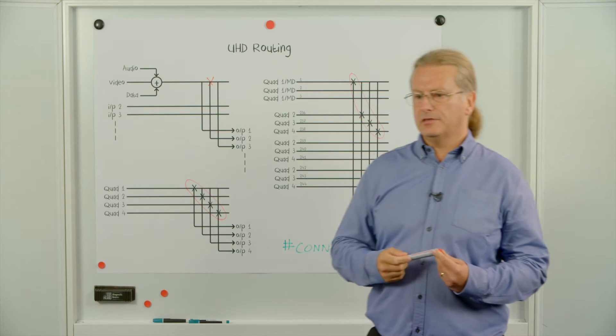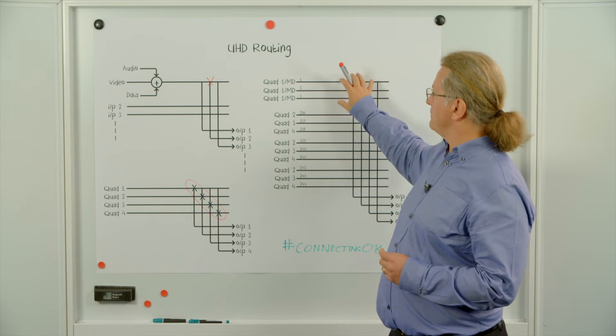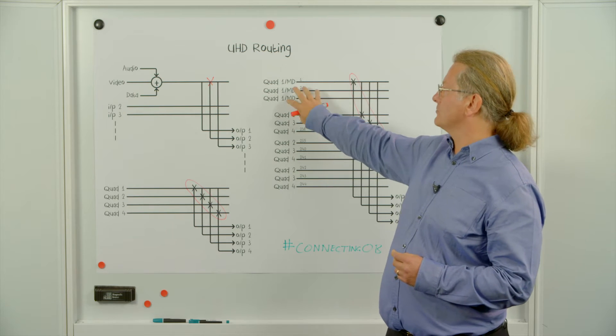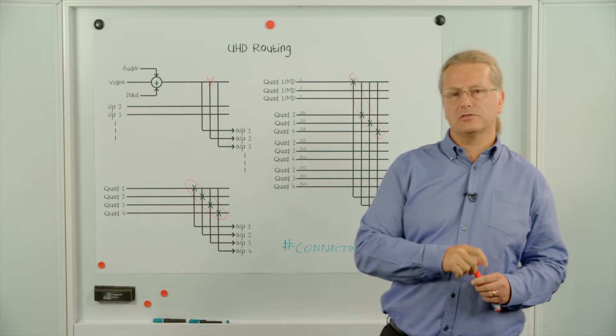The reason for doing this is to make the best use of hybrid routing cards where you put your expensive hybrid routing cards in those quadrants which have audio. Those which only carry video use lower cost cards.